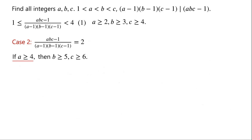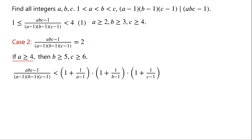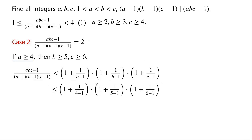If a ≥ 4, then b ≥ 5 and c ≥ 6. As shown above, abc - 1 / [(a-1)(b-1)(c-1)] < (1 + 1/(a-1))(1 + 1/(b-1))(1 + 1/(c-1)) ≤ (4/3)(5/4)(6/5) = 2. So when a ≥ 4, the ratio is less than 2, which implies Case 2 has no solutions when a ≥ 4.